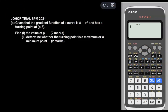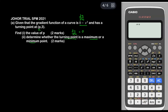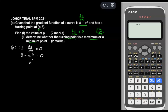This question is from the Johor trial SPM 2021 paper. The gradient function of a curve is 8 minus X cubed — this is DY/DX — and has a turning point at P(3). Find the value of P. At a turning point, DY/DX = 0, so 8 minus X cubed = 0, giving X cubed = 8, so X = cube root of 8 = 2. Therefore P equals 2.